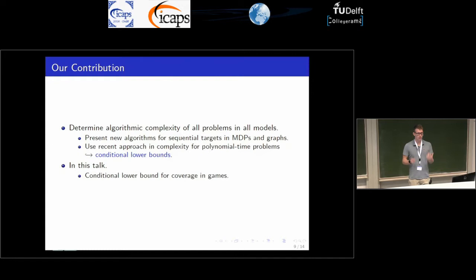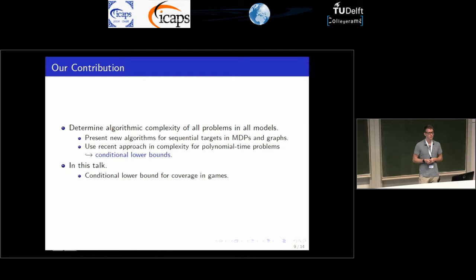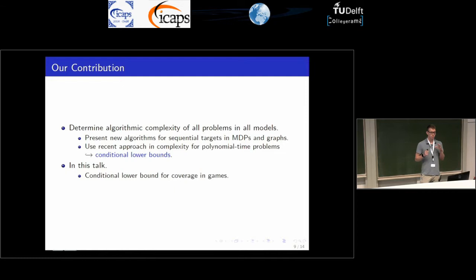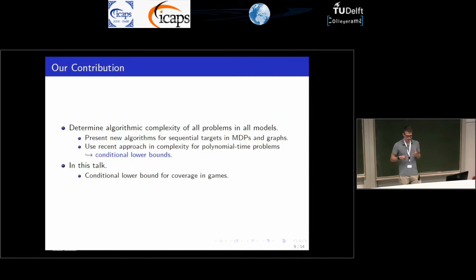We determined the algorithmic complexity of all those problems in all models. In particular, we present new non-trivial algorithms for the sequential target problem in MDPs and graphs. We used a recent approach in complexity theory for polynomial time problems to provide bounds on running time — specifically to show there is no linear time algorithm for this problem. In this talk I'm going to focus on one result: the conditional lower bound for coverage in games.